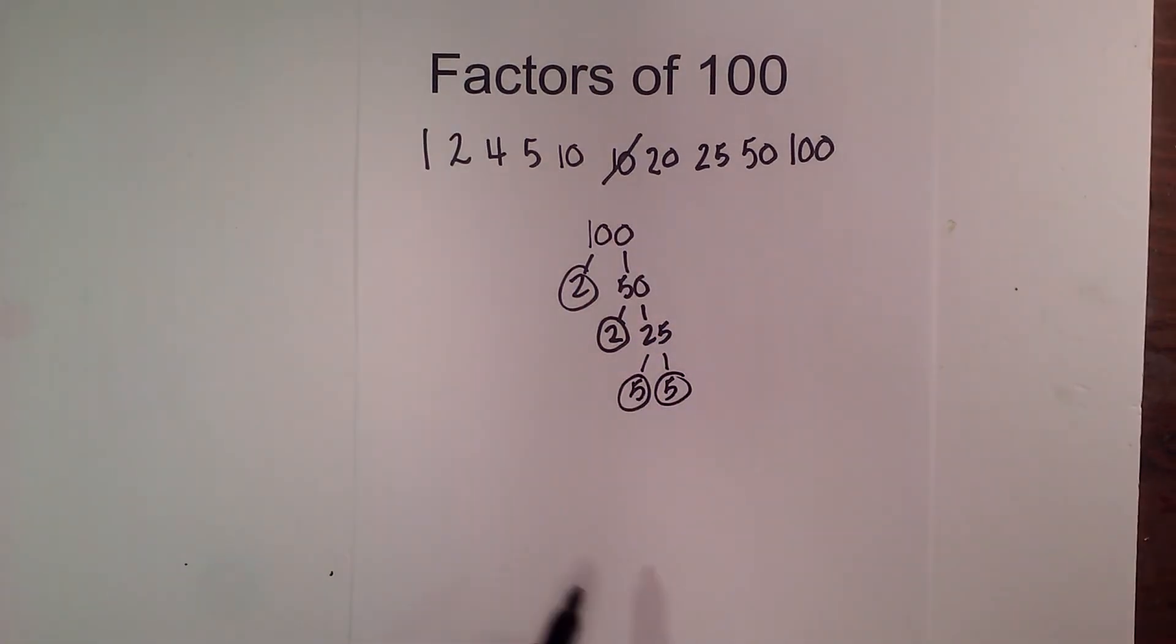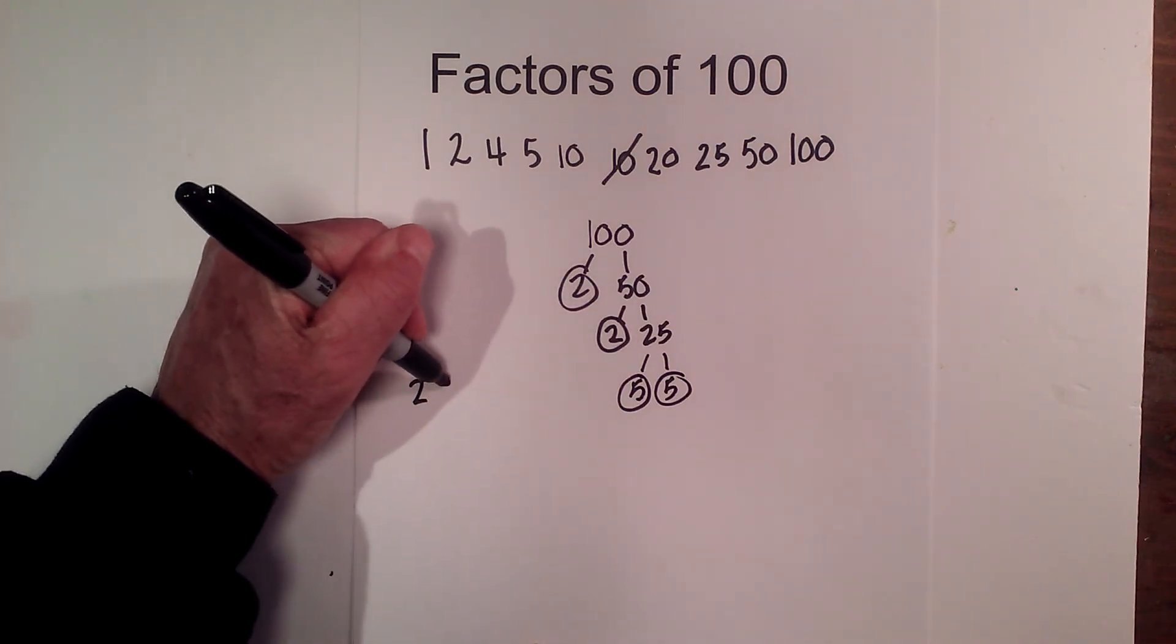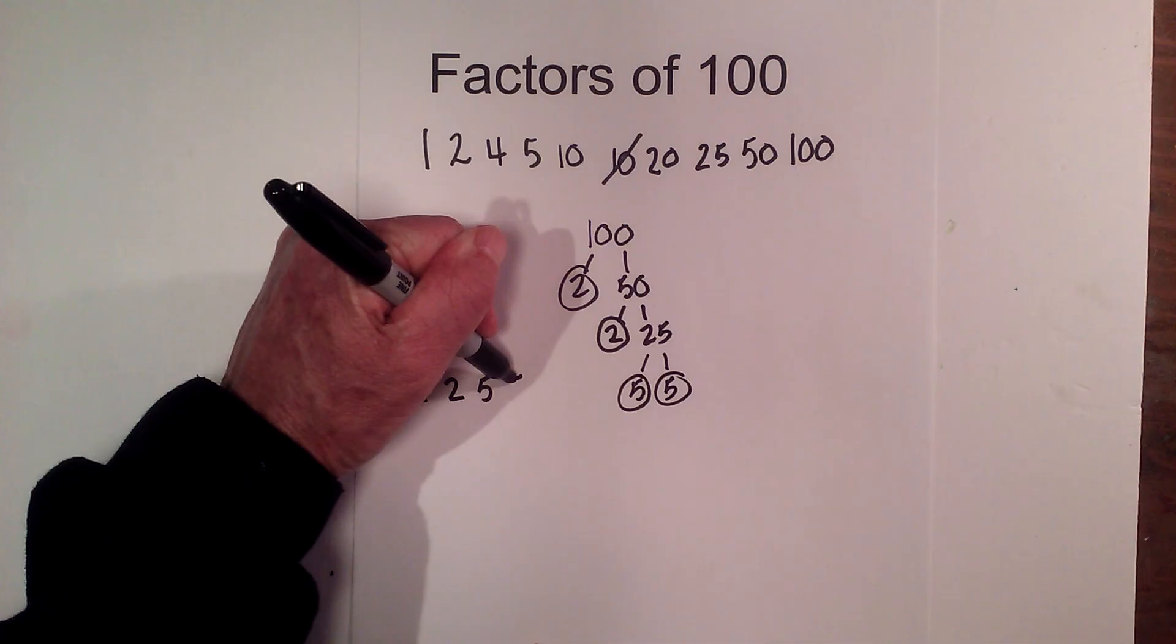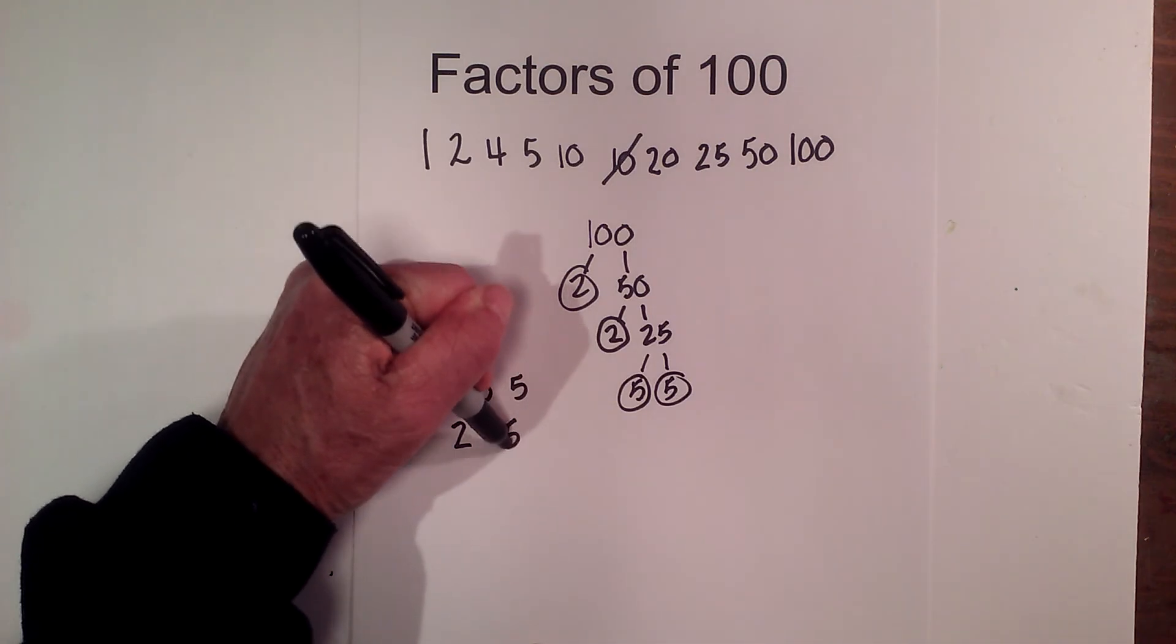And now 5 times 5 equals 25, and I am now down to all of my prime numbers. So the prime factors of 100 are 2, 2, 5, and 5, and you can rewrite that as 2 squared times 5 squared.